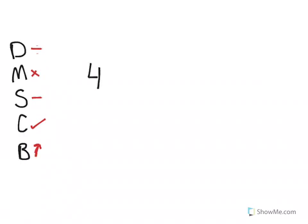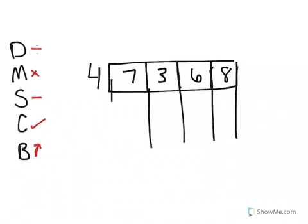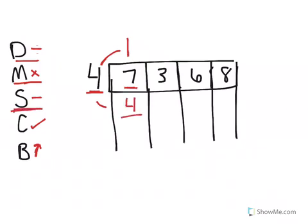My first problem is 4 into 7,368. Now I'm going to draw my boxes. One thing that helps me is to make my boxes a little bit longer, so I can just do my work in there. The first thing I want to think about is what times 4 gets me close to 7, or 7 divided by 4. So first I'm dividing — 4 goes into 7 one time. Now I have to multiply: 1 times 4 equals 4. My next step says I should subtract: 7 minus 4 equals 3.